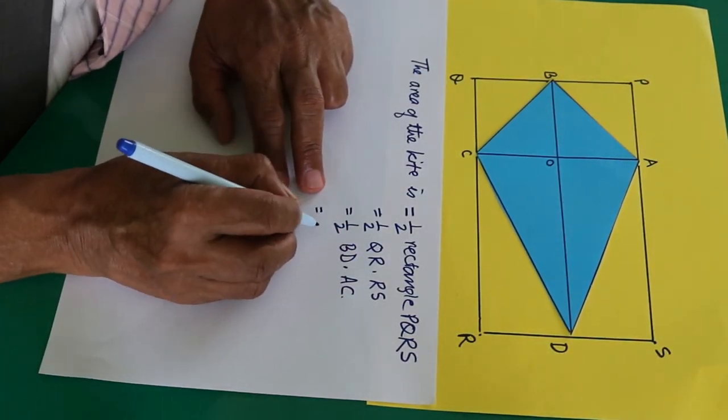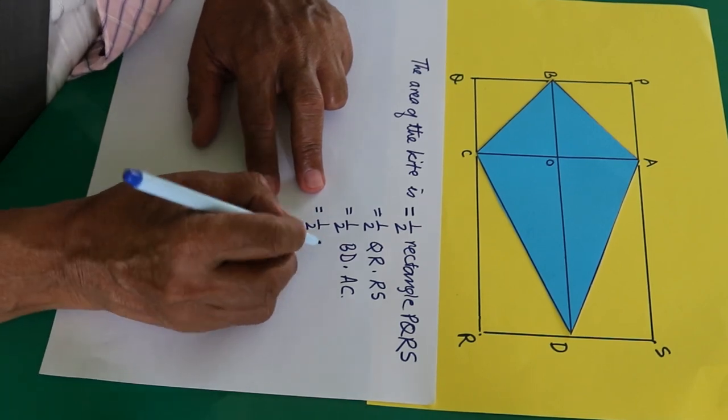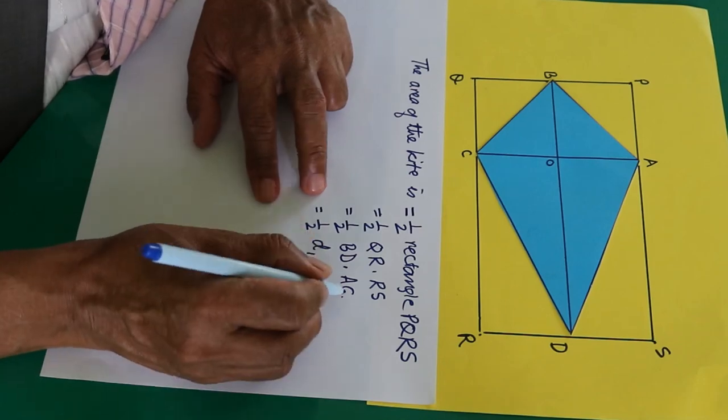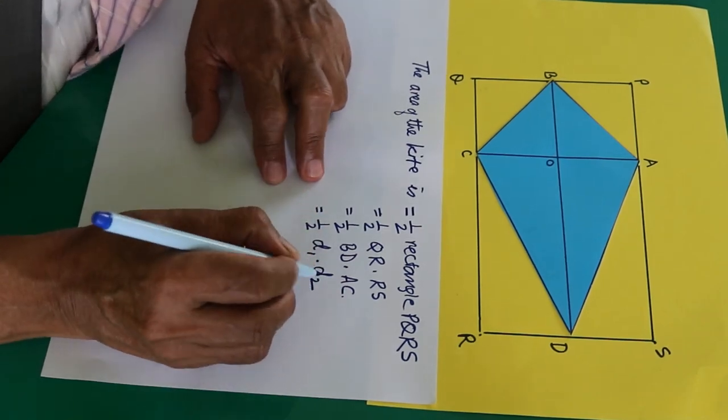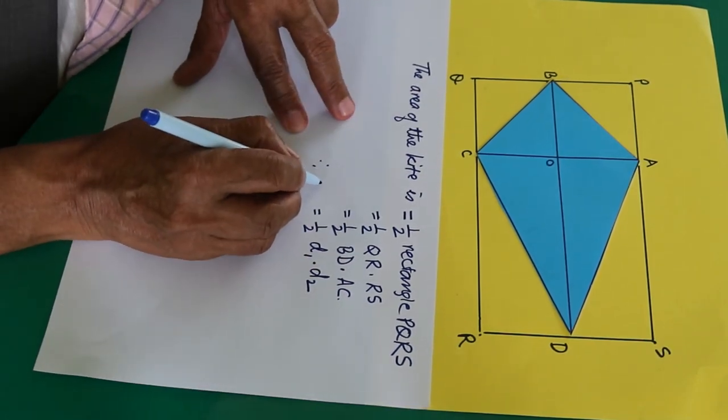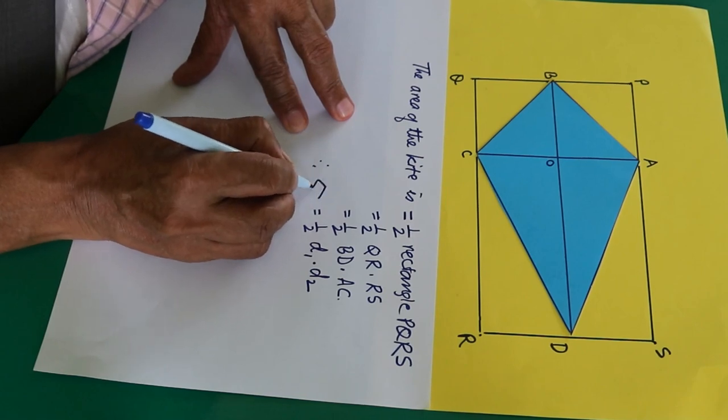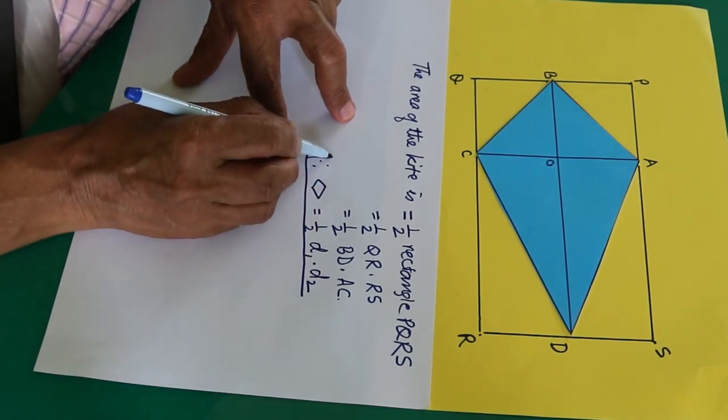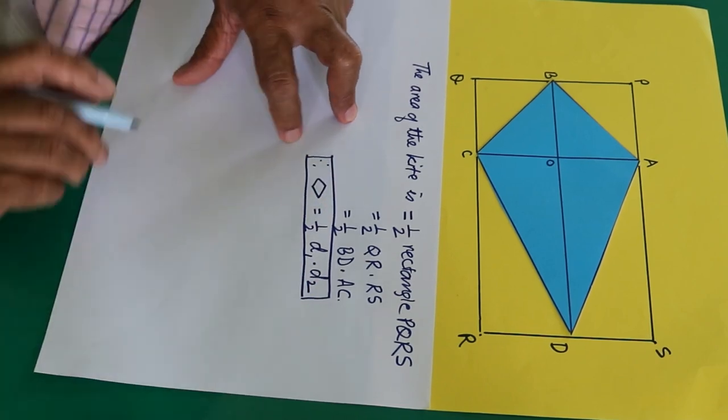So half BD is diagonal 1. You write D1, and AC is diagonal 2. Therefore, the area of the kite, abbreviated by the kite symbol, is equal to half product of its diagonals.